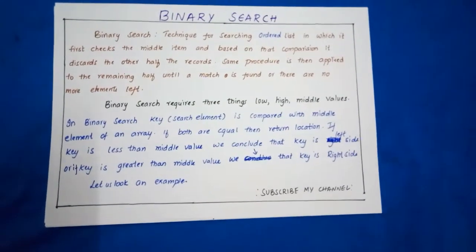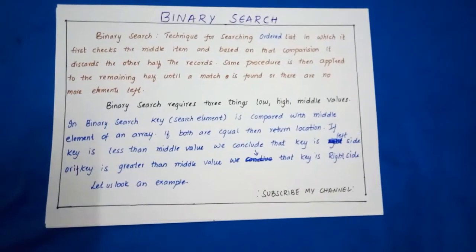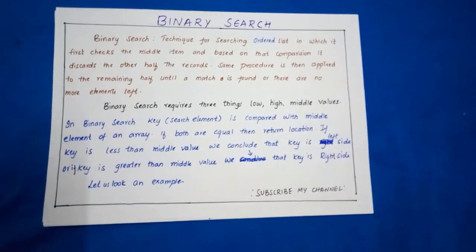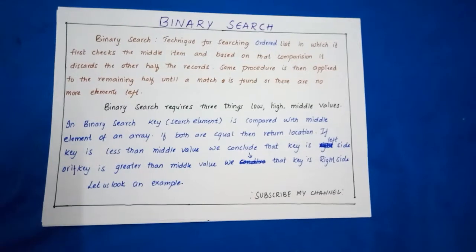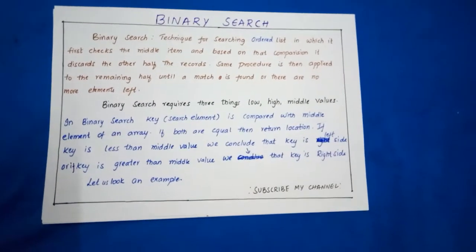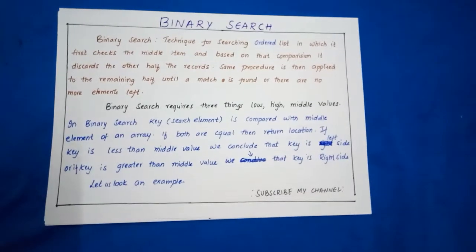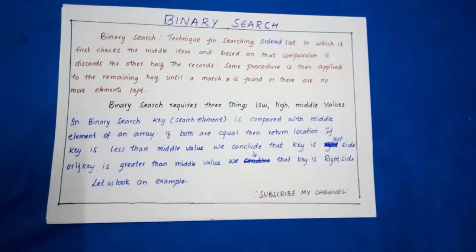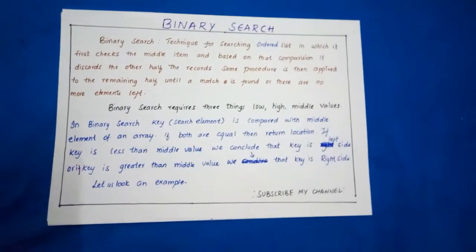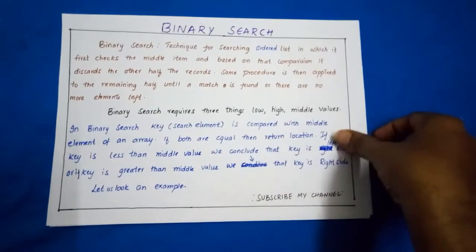When a key is compared with the middle value of an array, if both are equal then we just return the location. If key is less than the middle value, we conclude the key is on the left side. If the key is greater than the middle value, we conclude that the key is on the right side. In this way, we are dividing the given array into two parts — a right side part and a left side part with respect to the middle value.